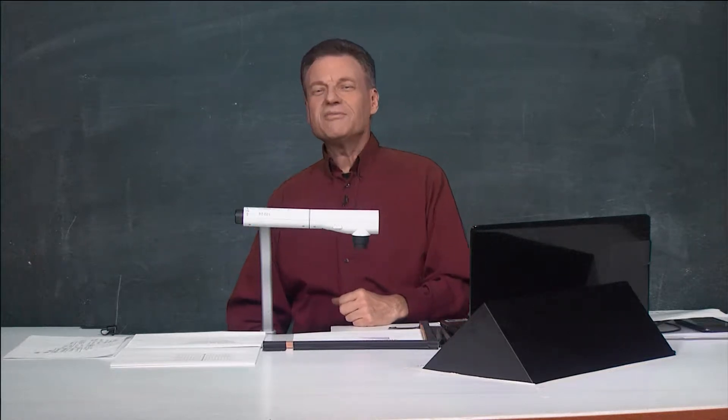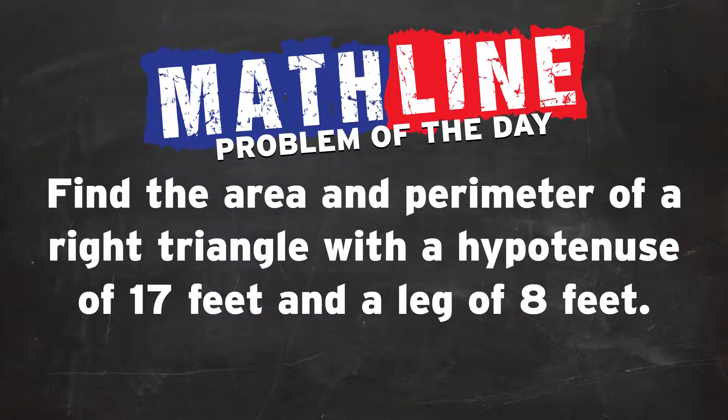Let's get it cranking. Problem of the day time. And we've got, find the area and perimeter of a right triangle with a hypotenuse of, no, add one more to that, 17 feet and a leg of 8 feet.